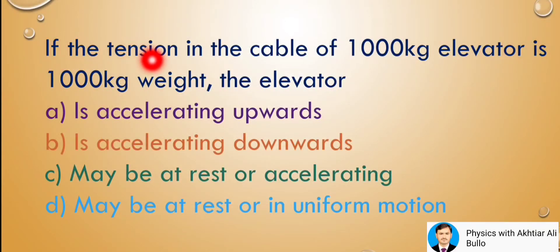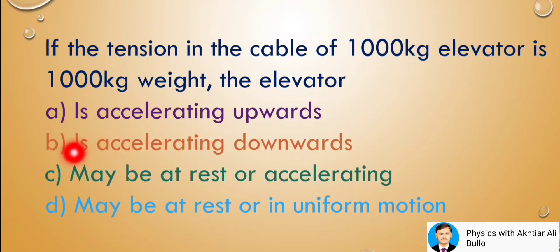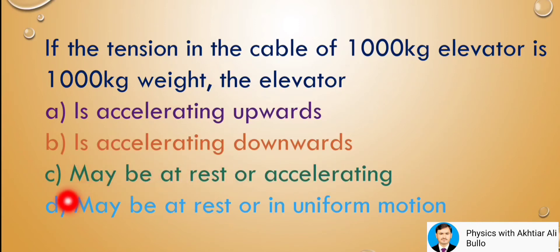If the tension in the cable of a 1000 kg elevator is 1000 kg weight, then: A is accelerating upwards, B is accelerating downwards, C may be at rest or accelerating, D may be at rest or in uniform motion.